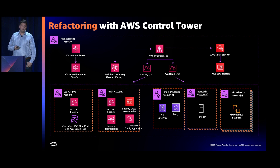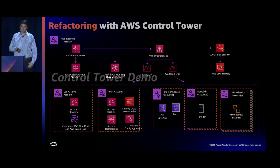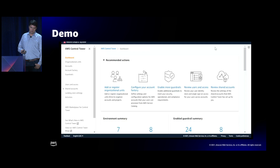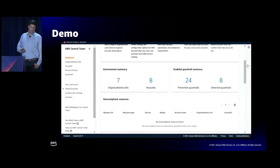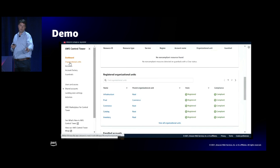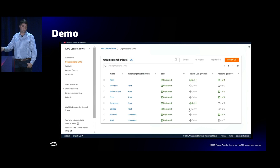Now let's switch over to the demos. In the first demo, we'll show Control Tower — how we're going to align OUs to what we showed in the slides, how we're going to apply guardrails to those environments, and take you through a quick provisioning of a new account. So this is the Control Tower console. We can see the accounts under management and the number of guardrails enforced right now, check the compliance state, and see all the different OUs — showing our nestings, parent OUs, child OUs, and whether we're within compliance and registered into Control Tower.